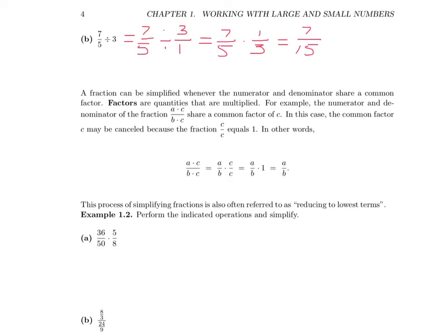Now let's talk about simplifying fractions. A fraction can be simplified whenever the numerator and the denominator share a common factor. Factors are simply quantities that are multiplied. Consider this fraction: A and C are factors in the numerator, B and C are factors in the denominator. So C is a common factor in the numerator and the denominator. The common factor C can be cancelled out of the fraction because the fraction C over C equals 1, since C divided by C is 1.